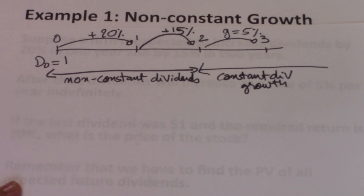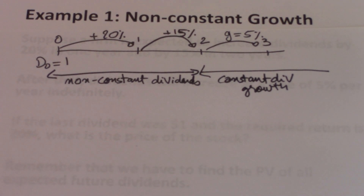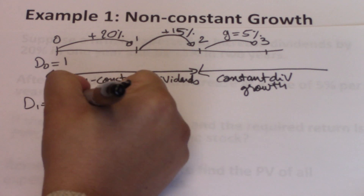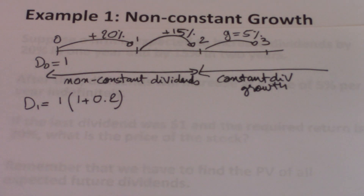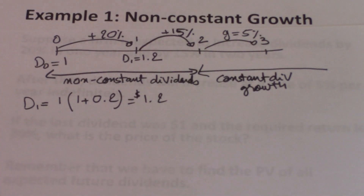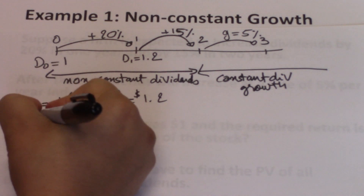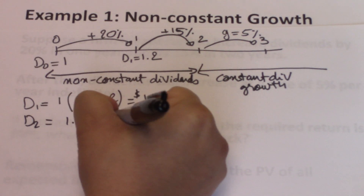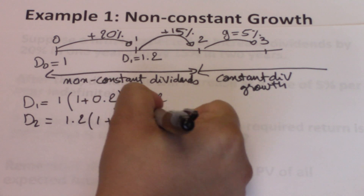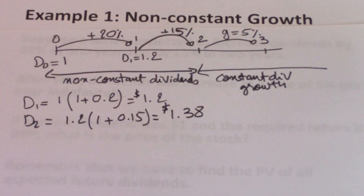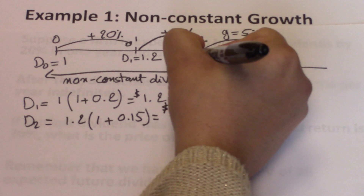Now we need to determine the expected dividends. D1 can be calculated by taking the $1 dividend and multiplying it by 1 plus 0.2, because that $1 is going to grow at 20%, which gives us D1 = $1.20. The problem tells us that the dividend after year 1 grows by 15%, so D2 equals D1 of 1.2 multiplied by 1 plus 0.15, which gives us D2 = $1.38.